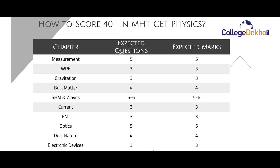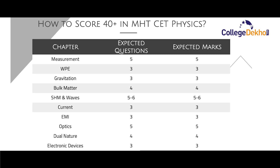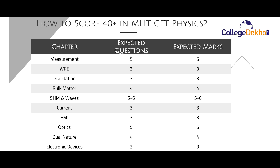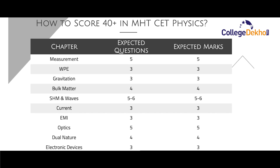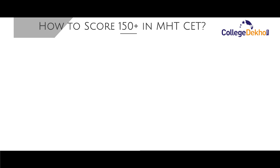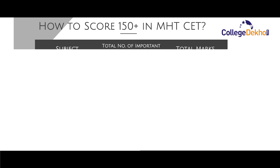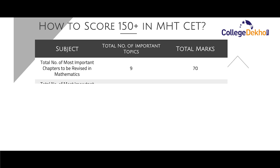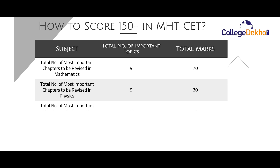For Electronic Devices, you can expect 3 questions for 3 marks. From these data, we can say that the above topics will carry almost 40 marks in the Physics section of MHT CET. It is important to emphasize these chapters first and then proceed with the rest to improve your score. Now that we are done with Physics, Chemistry, and Mathematics, let us look at how you can score 150 plus marks collectively in MHT CET, as per the subject-wise strategy.